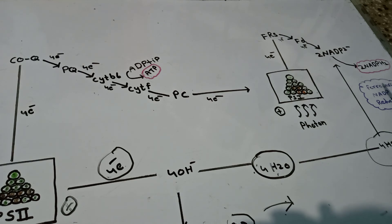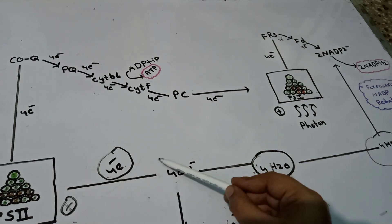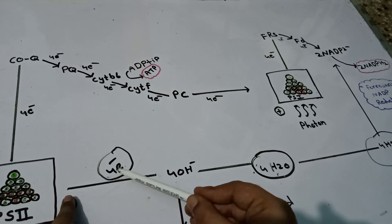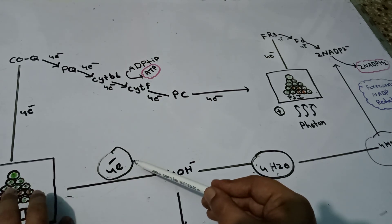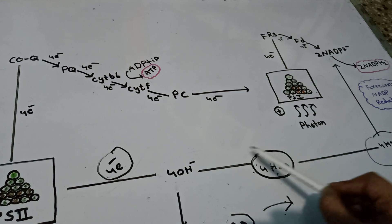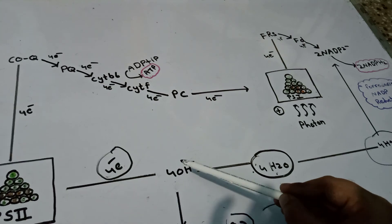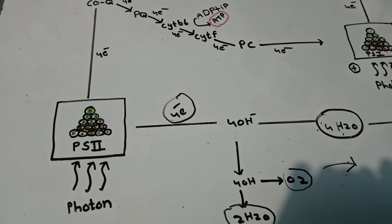The protons are utilized in the conversion of NADP to NADPH₂. The electrons released after the splitting of the water molecule are given back to Photosystem 2, which then returns to a neutral state and is ready again to receive photons and continue the reaction. From the four hydroxyl ions produced, two water molecules and two oxygen molecules are formed — completing the process.